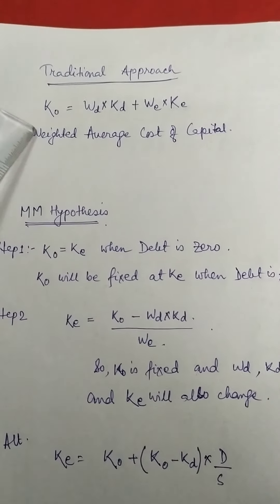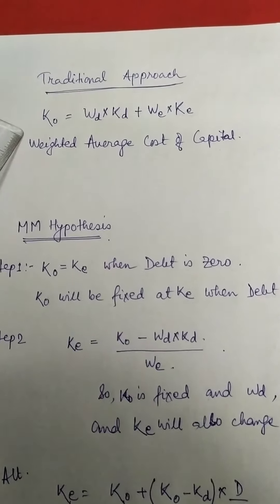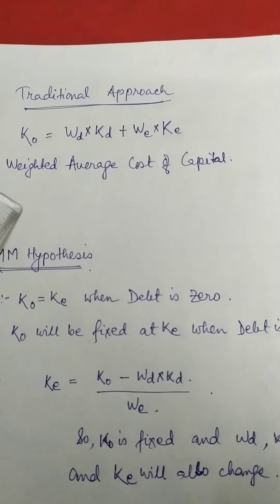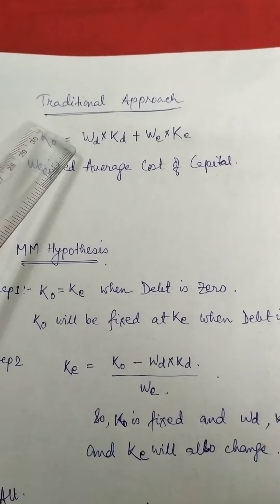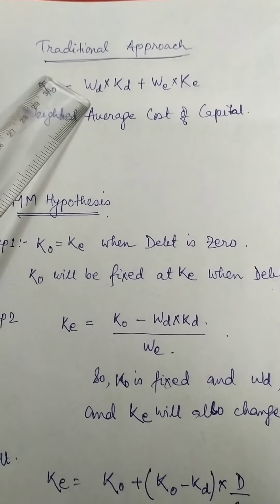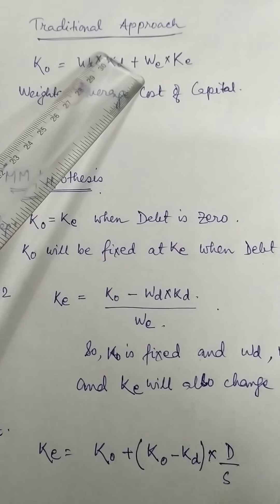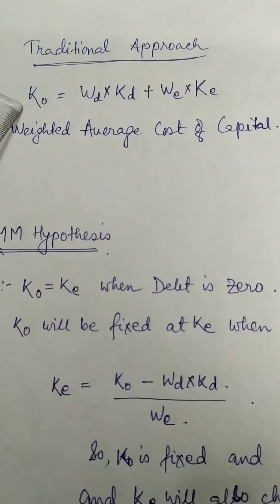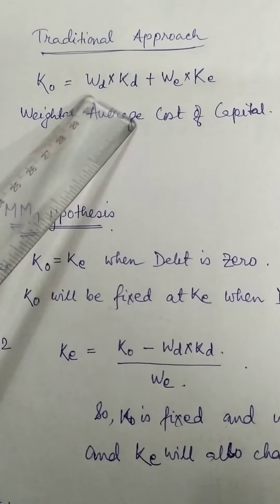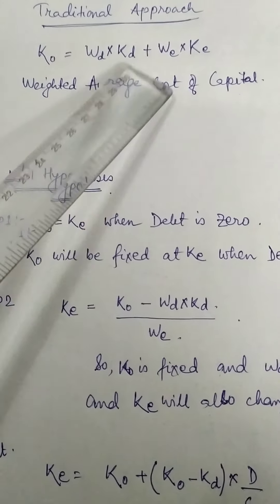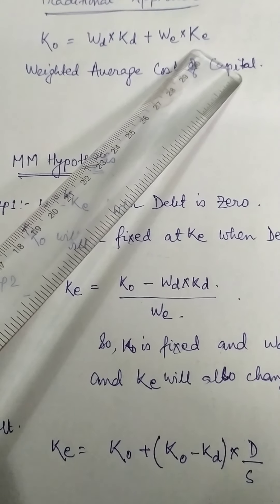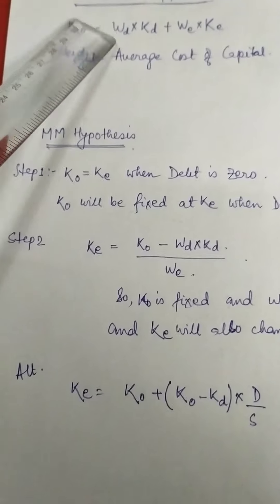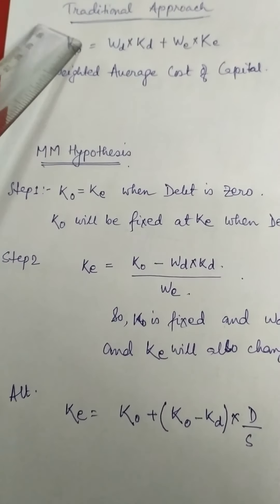In the traditional approach, the overall cost of capital or weighted average cost of capital is calculated as: KO = WD × KD + WE × KE, where WD and WE are the weights of debt and equity, and KD and KE are their respective costs. This is how the weighted average cost of capital is calculated.